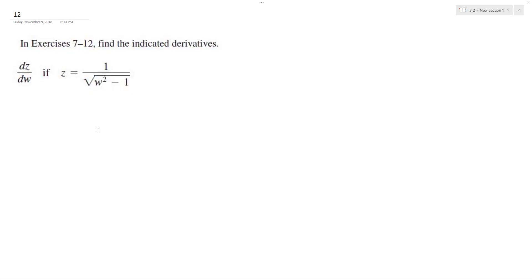So I want to solve the following problem. I'm going to set z equal to w squared minus 1 raised to the negative 1 half. It will just be easier to work with this. And essentially we just use a chain rule here.